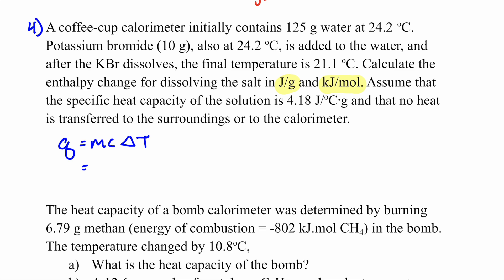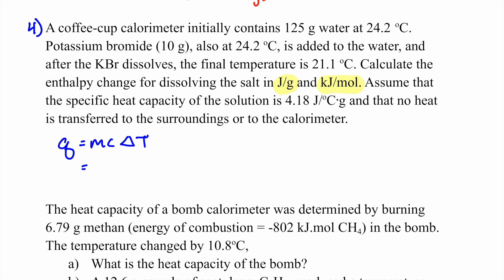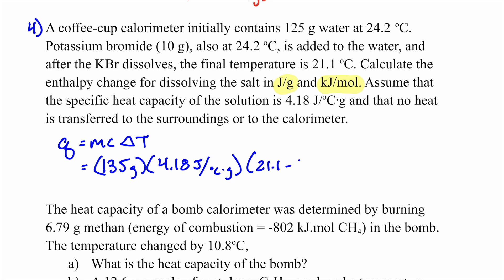The minute you see specific heat capacity, think Q = mcΔT. The mass is 125 + 10 = 135 grams — you include the salt in solution. Specific heat capacity is 4.18 J/g·°C. ΔT = 21.1 − 24.2 = −3.1°C. This gives Q = −1749.3 joules.